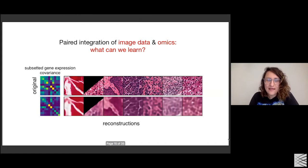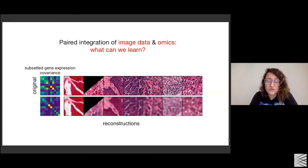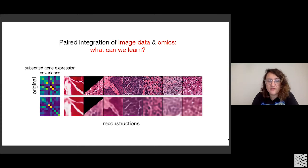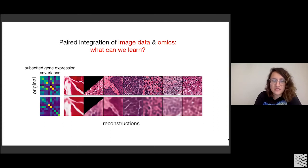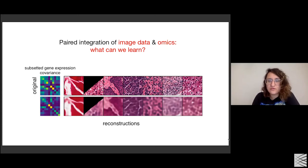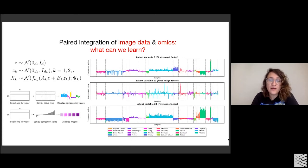What can we really do and learn from this particular model? We can learn reconstructions — you can see some blurry reconstructions here that can of course be improved with better architecture. On the top we see the original, on the bottom the reconstruction. Similarly, we can do reconstruction for the covariance of gene expression. There are a lot of genes depicted, and there's a lot of work to improve this setting, but one of the things we can get is reconstruction of both gene expression and images.